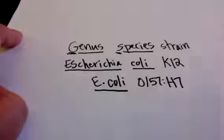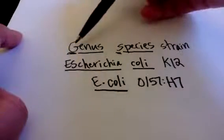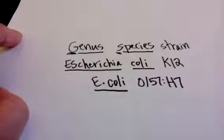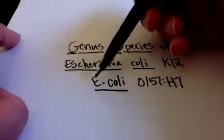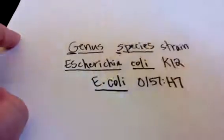So, to recap really quickly: always write the genus and the species, capitalize genus, lowercase species, underline it if you're writing it, and if you're typing it, you can put it in italics. Once you've written it out fully, then you can switch to the abbreviation: capital genus, period, and then the species name.